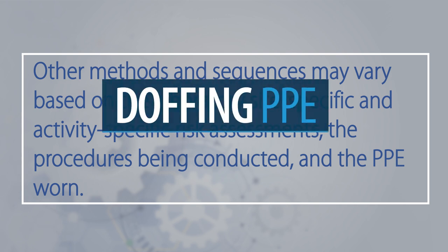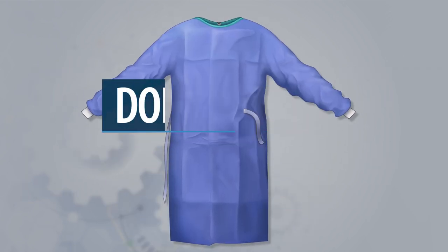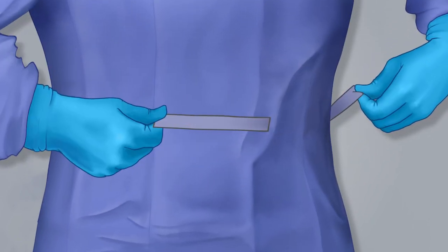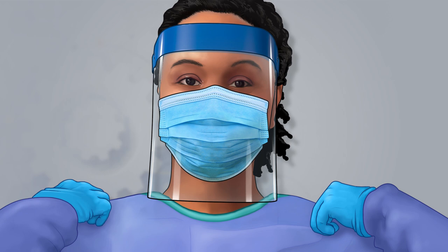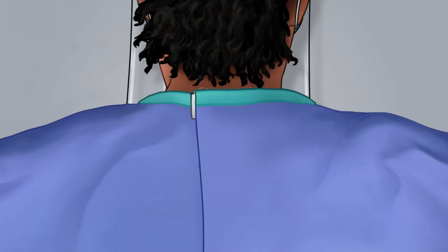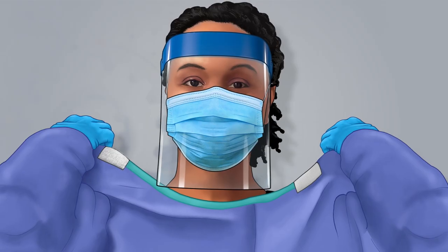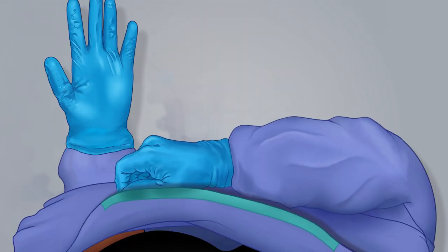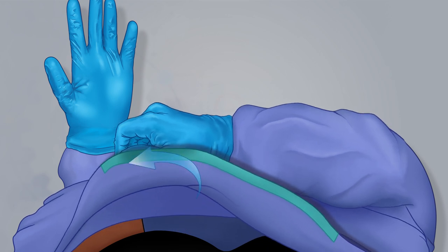The first step of doffing your PPE is removing your gown. To do this, untie the gown at your waist, grasp the gown's shoulders, and pull the gown forward, releasing the neck closure. Pull the gown off of your shoulders and away from your body, rolling the gown inside out as you go.